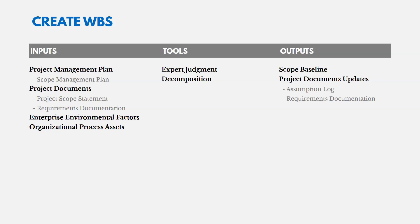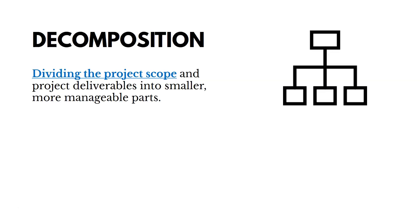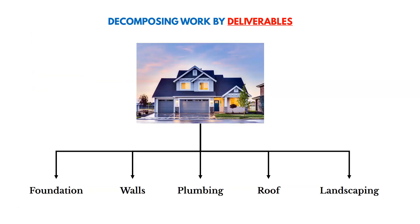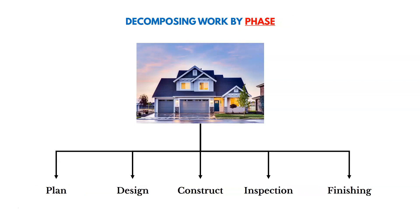The tools are expert judgment and decomposition. Decomposition is dividing the project scope and deliverables into smaller, more manageable components. You can decompose work by deliverables — if we're building a house, deliverables could be the foundation, walls, plumbing, roofing, electrical, landscaping, and so on. Or you could break it down by phase: planning, design, construction, inspection, finishing, and so on. You would know best how to categorize that work.